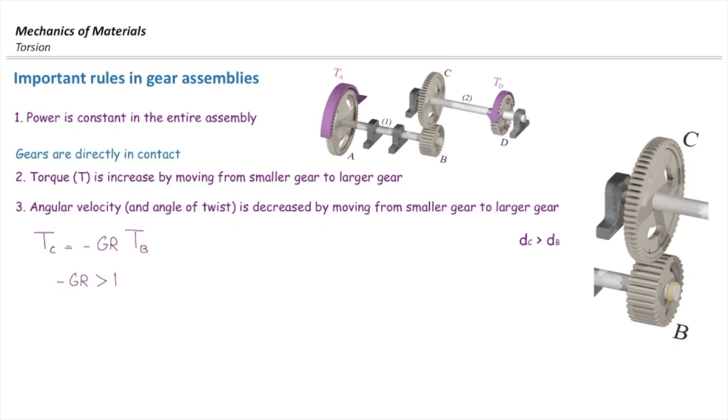And that helps me finding appropriate ratio for this case. So gear ratio should be DC over DB because it has to be larger than one. Does that make sense?